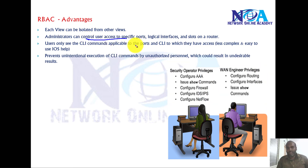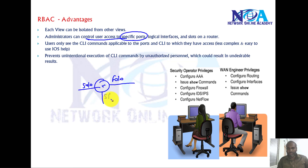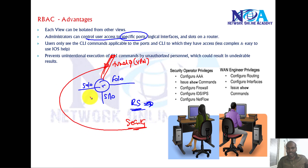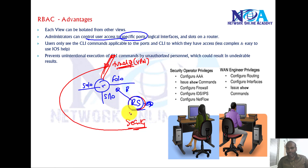Another advantage is controlling access based on specific ports, interfaces, or slots. For example, routing switching engineers can configure physical interfaces like S1/0. But a tunnel interface used for VPN security can be restricted to the Security Engineer only — the security engineer can make changes to the tunnel interface but not to the physical interfaces, and vice versa, as per the requirement.